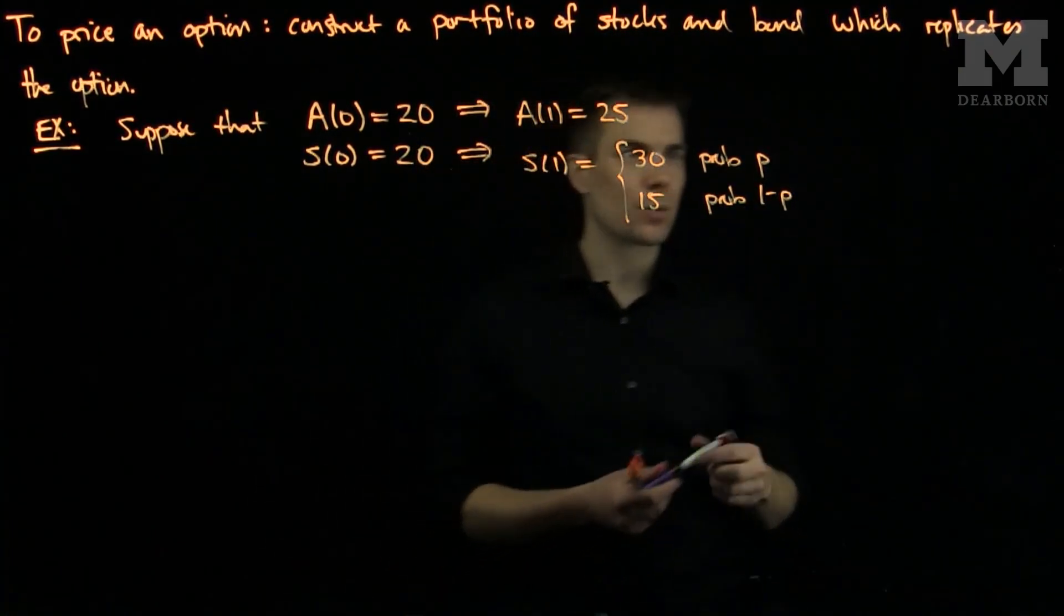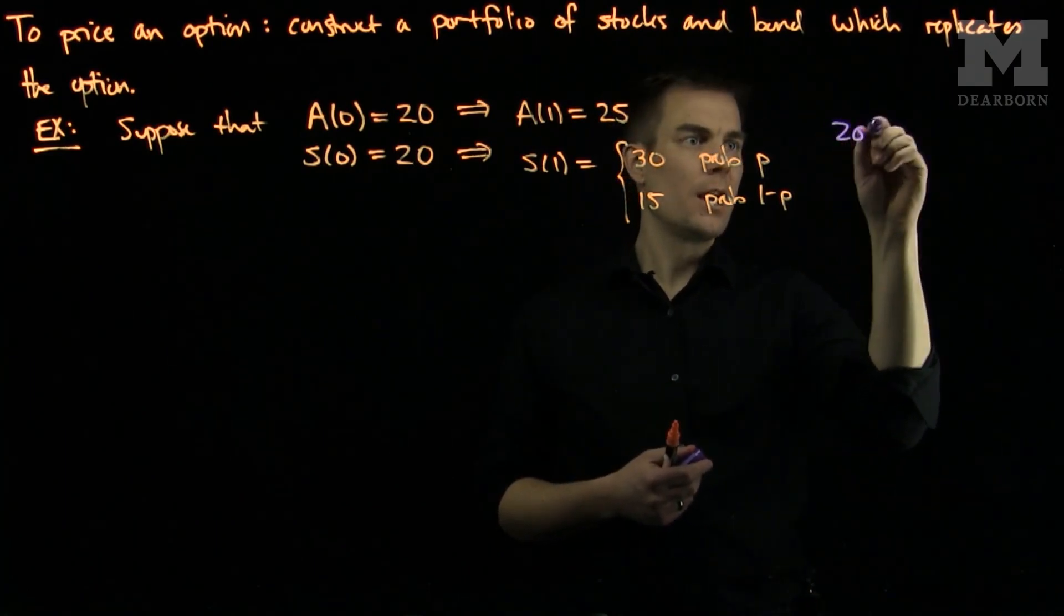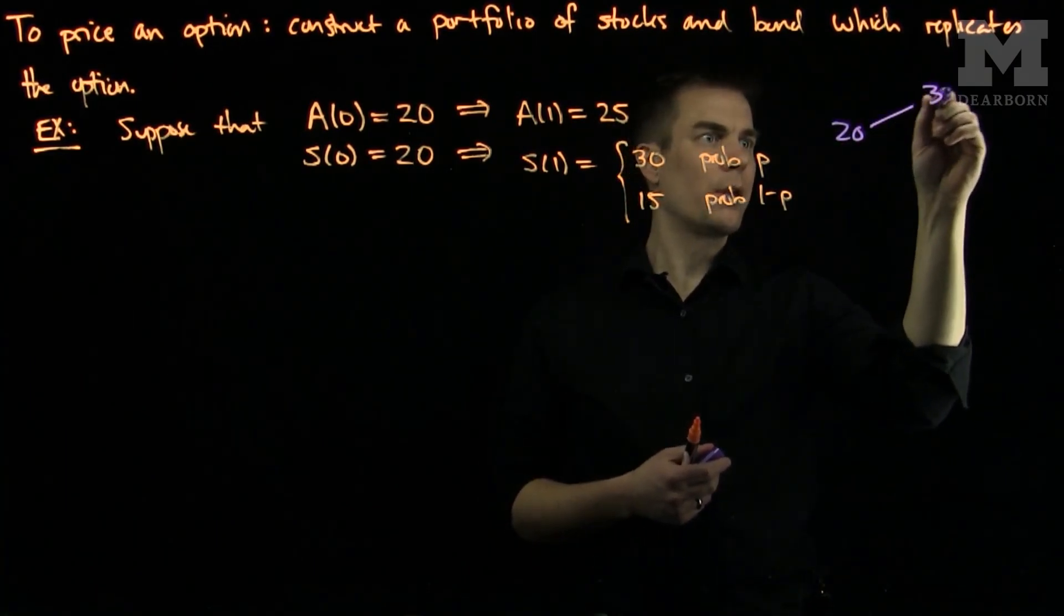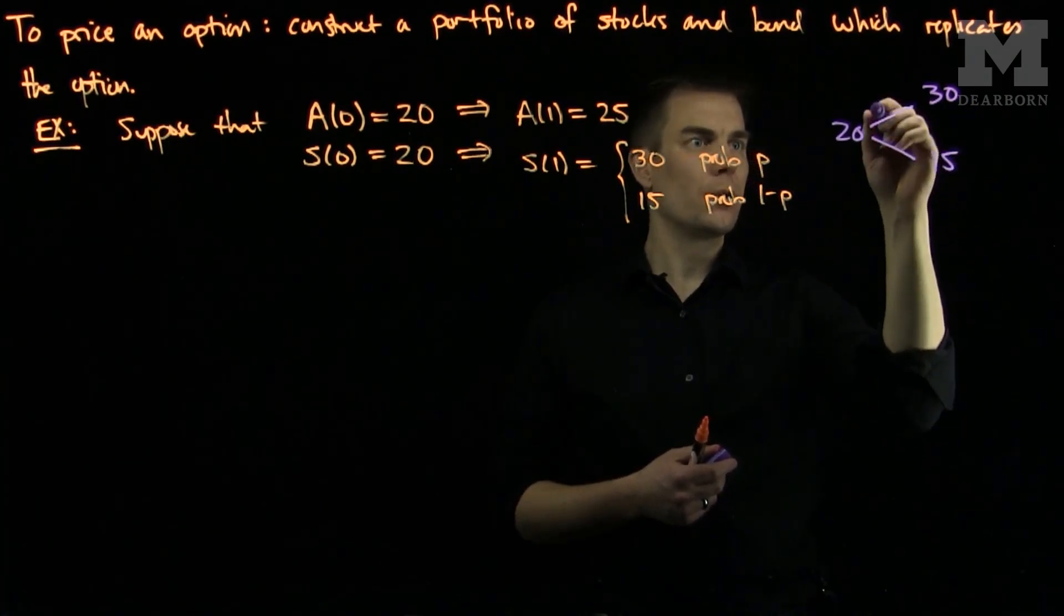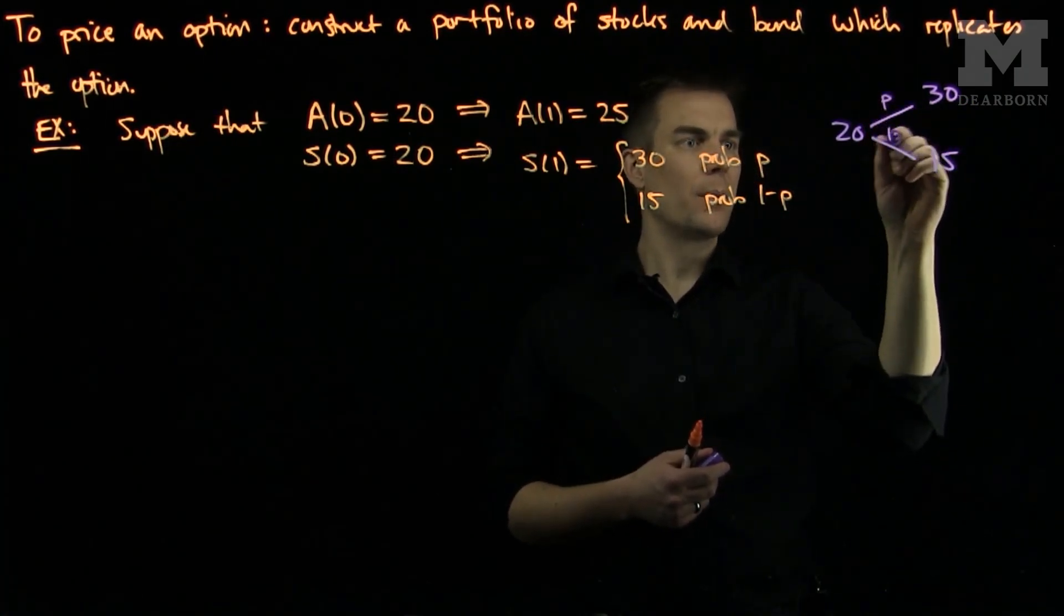So what will happen over here is we'll have our stock price of 20, and 20 will either go to 30 in one node and it will go to 15 in another node. And this is with probability P and probability 1 minus P.